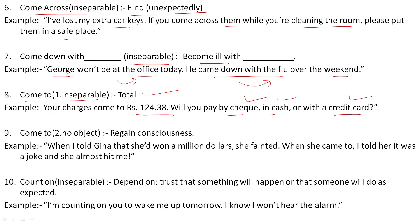There is also 'come to' with no object, meaning to regain consciousness. Example: When I told Gina that she had won a million dollars, she fainted. When she came to, I told her it was a joke and she almost hit me.